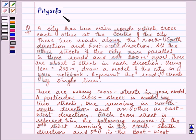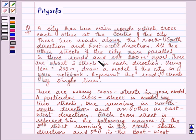Hi and welcome to the session. I am Priyanka and I will be helping you with the following question: A city has two main roads which cross each other at the center of the city. These two roads run along the north-south direction and the east-west direction. All the other streets of the city run parallel to these roads and are 200 meters apart. There are about 5 streets in each direction. Using 1 centimeter equal to 200 meters, draw a model of the city on your notebook. Represent the road streets by single lines.